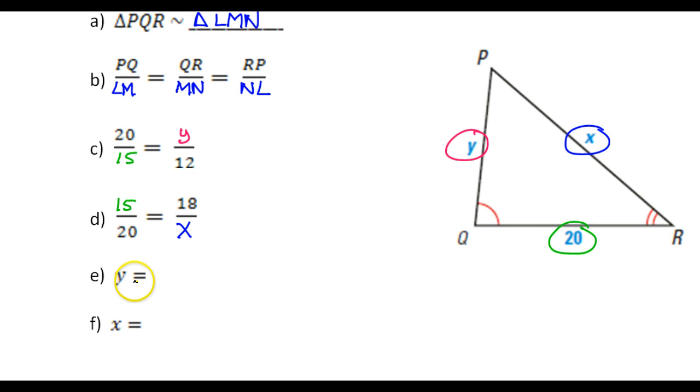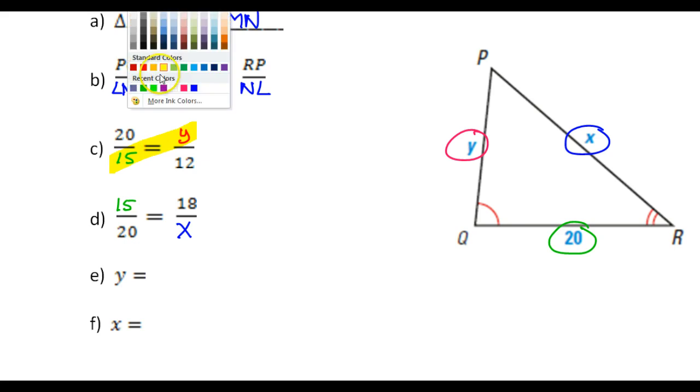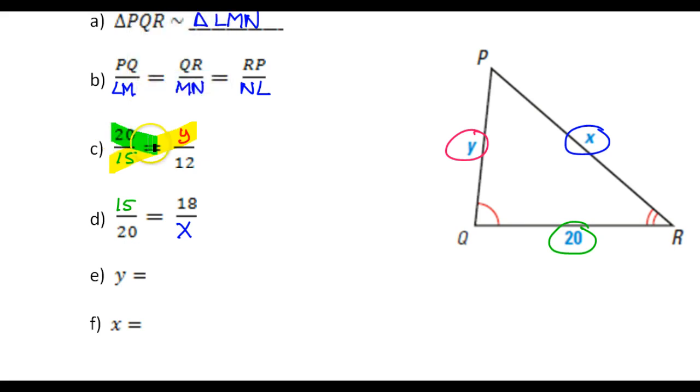And then down here, we're supposed to say, well, what is Y and what is X? We can actually use this equation up here to find Y. By cross-multiplying. So when I talk about cross-multiplying, I'm talking about using these diagonals like this and then like this. So if I do that, 15 times Y, so that's 15Y equals, now 20 times 12, that's 240.